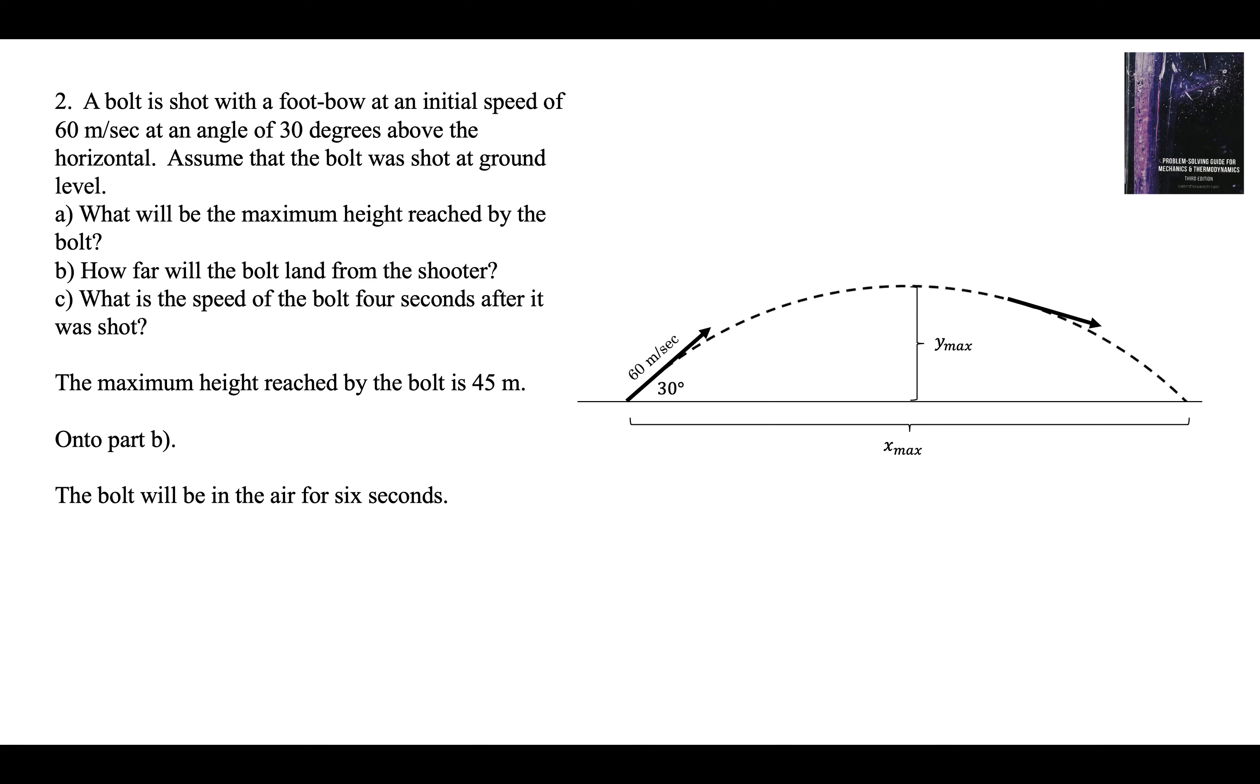Part B. The bolt's going to be in the air for 6 seconds. 3 seconds up, 3 seconds back down. It's traveling 52 meters each second horizontally. If it goes 52 meters each second horizontally, and it's in the air for 6 seconds, it's going to travel 312 meters in the horizontal direction. That's the answer to part B.